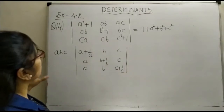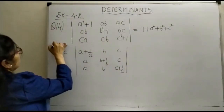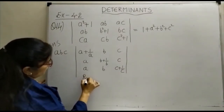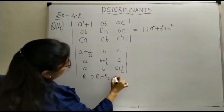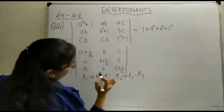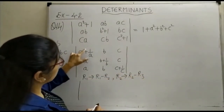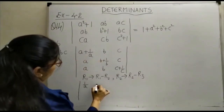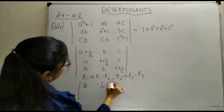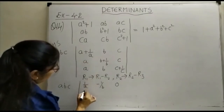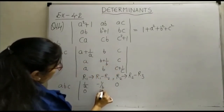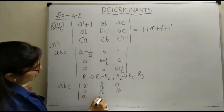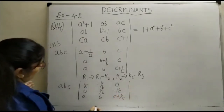So we took abc common from the first, second, and third rows. Now starting from the left-hand side, we can get some zeros by doing R1 = R1 − R2 and R2 = R2 − R3. For R1: (a + 1/a − a) = 1/a, (b − b) gives −1/b (with sign), and the last entry becomes 0. For R2: we get 0, then 1/b, and −1/c. The third row remains as: a, b, c + 1/c.